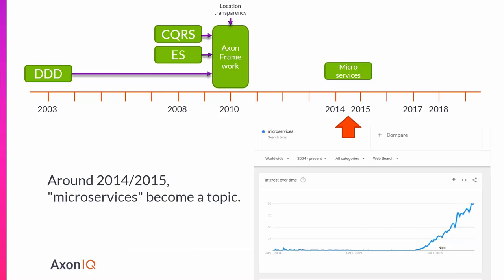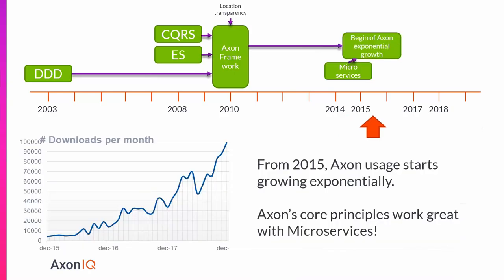Microservices suddenly became a big thing and everybody started talking about that. That was also the moment when Axon started to grow really fast. We see a chart of downloads per month growing exponentially — about 100,000 downloads per month by the end of last year, and growing even further. This mainly has to do with the microservices trend. People were rediscovering these old concepts in the context of microservices and found them really useful.